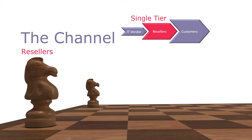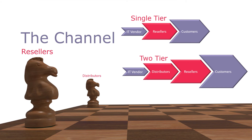Many IT resellers offer broad product lines, and so cannot be experts in everything they sell. The vendor may not have the necessary resources to support their resellers, and so may elect to operate a two-tier model. In this model, resellers buy from distributors, who have the scale and expertise to support the resellers' interactions with customers.